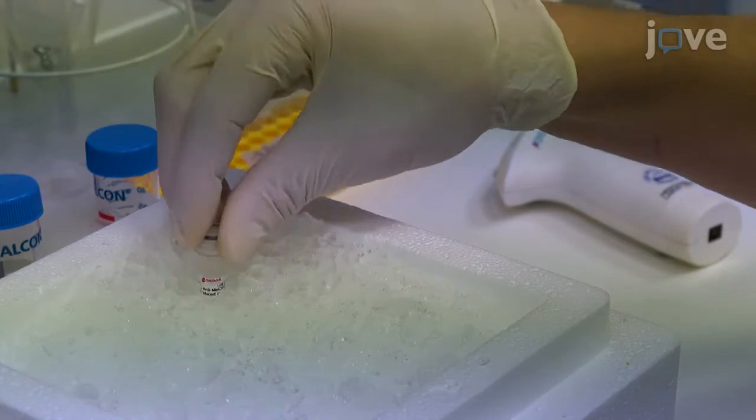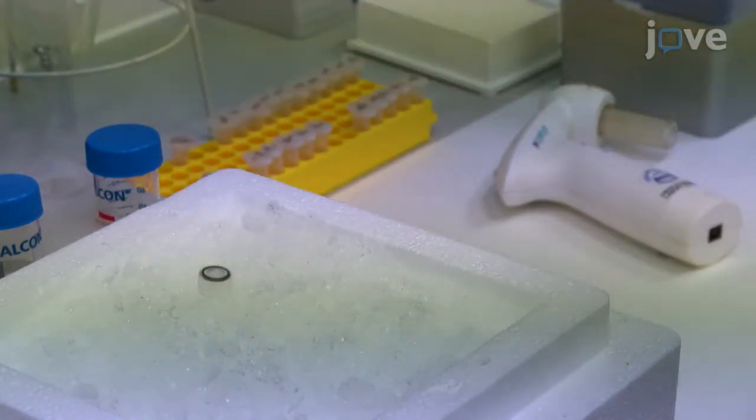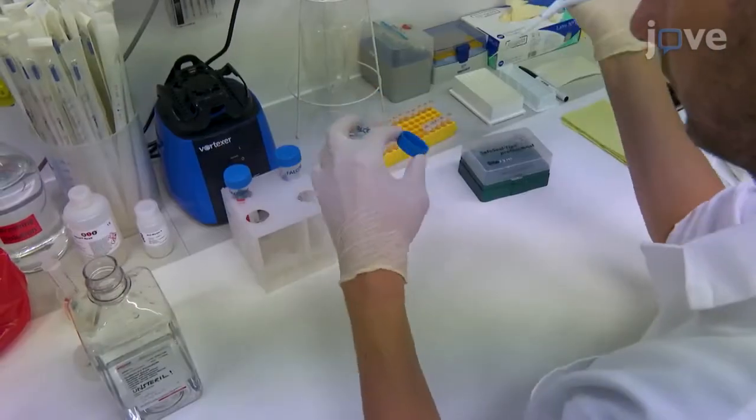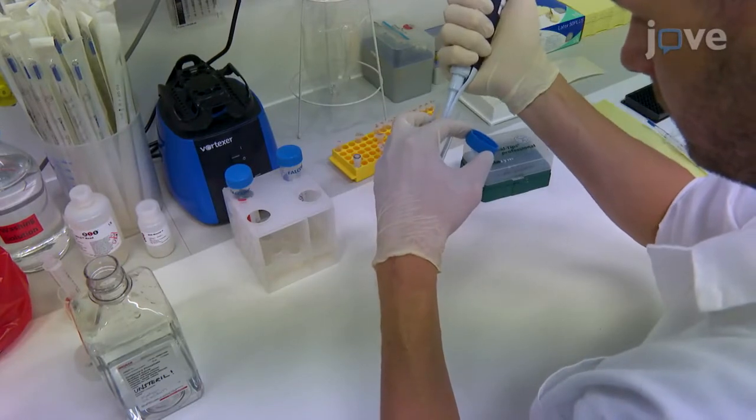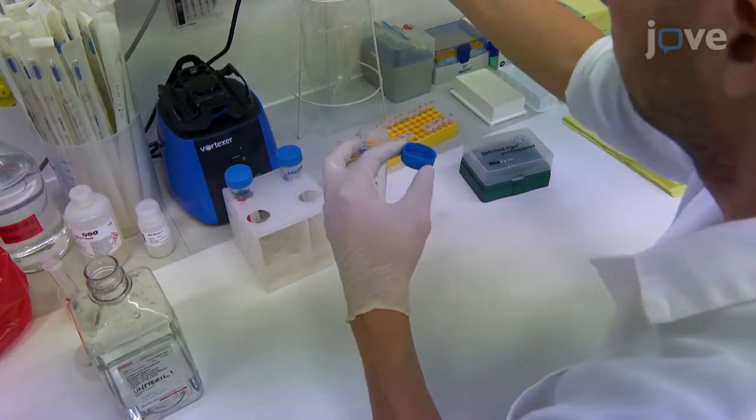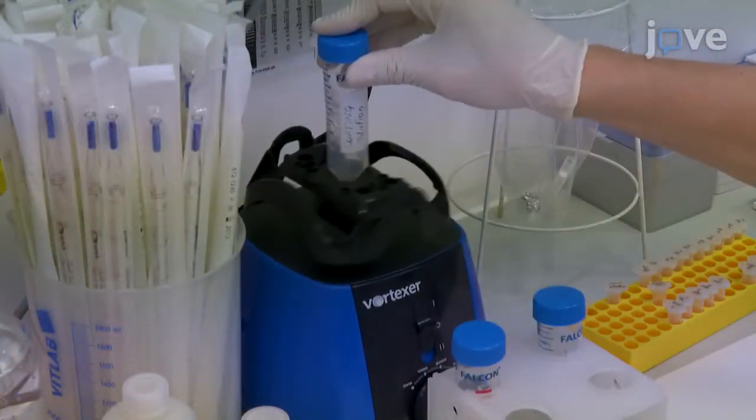Next, thaw the monoclonal mouse anti-MeCP2 antibody on ice. Mix 0.67 microliters of the antibody with 4 ml of PBS, then vortex the solution.